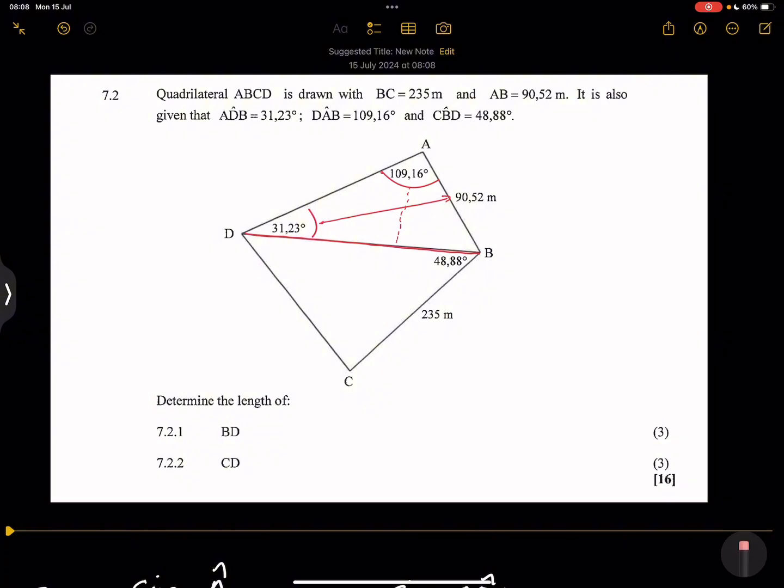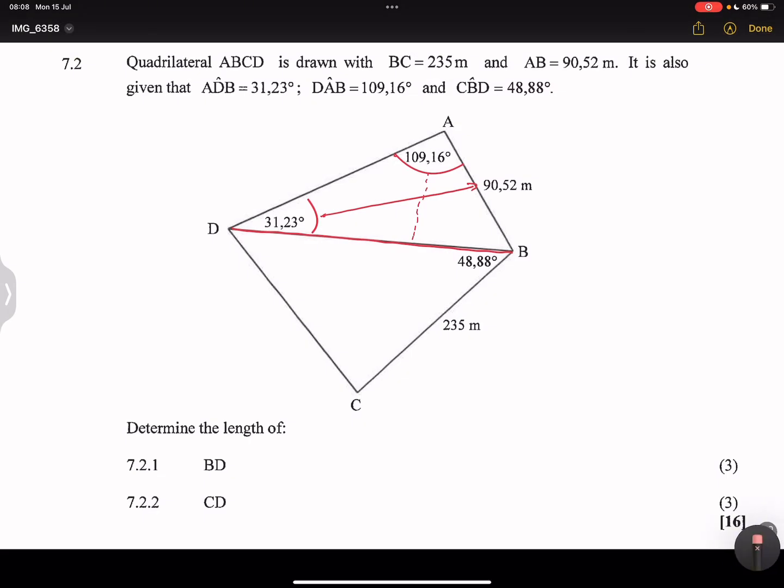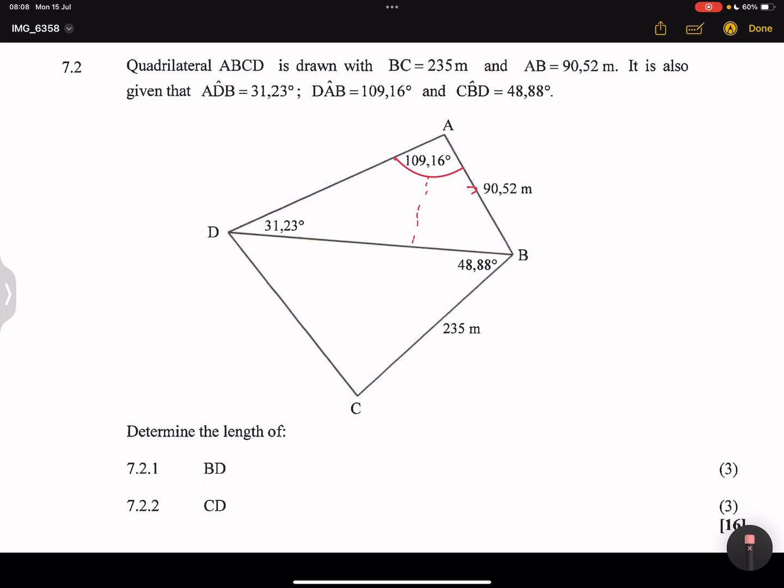So they say to us, we must look for the length of CD. Now notice, ladies and gents, if I look at CD, that is definitely on the other triangle. So we're looking for this side over here. So now we're looking for side CD and we're going to use triangle DBC. And it's often very advisable for you to mention which triangle you're working in. I should have done that for the previous question. So we're working on triangle DBC or you can say CBD.